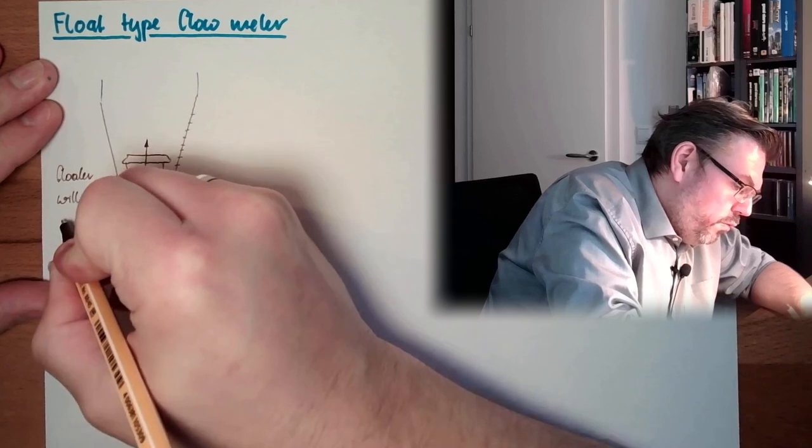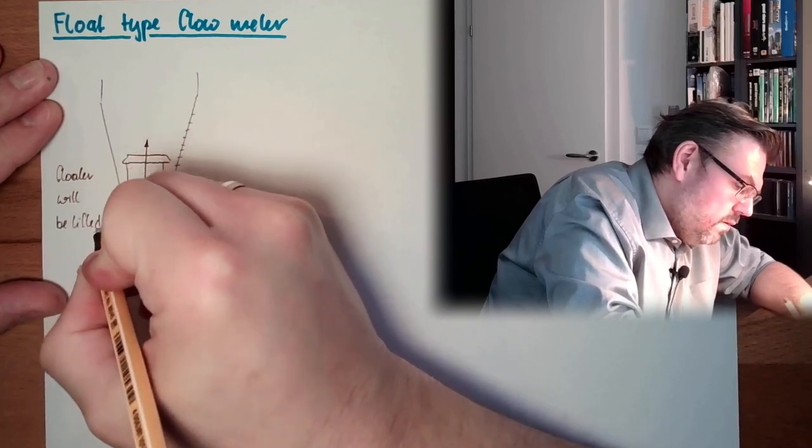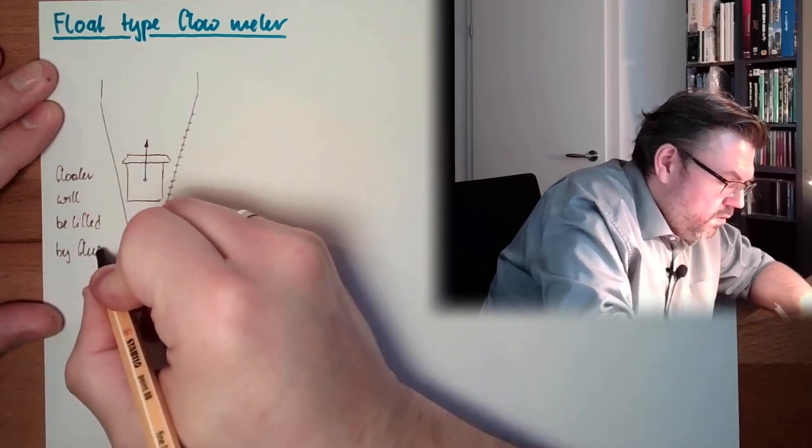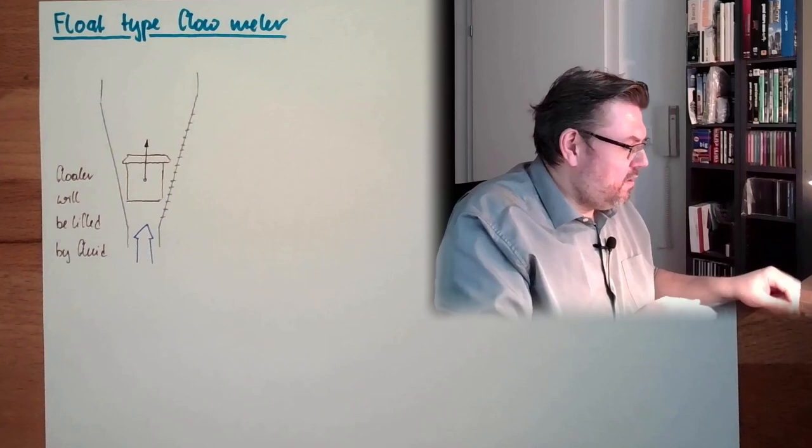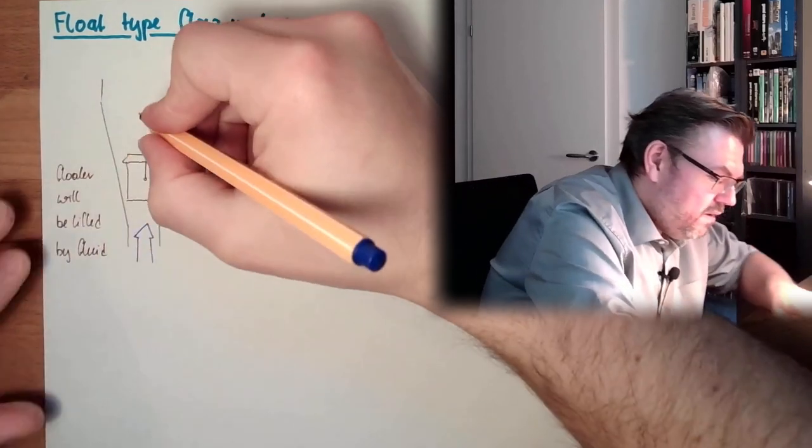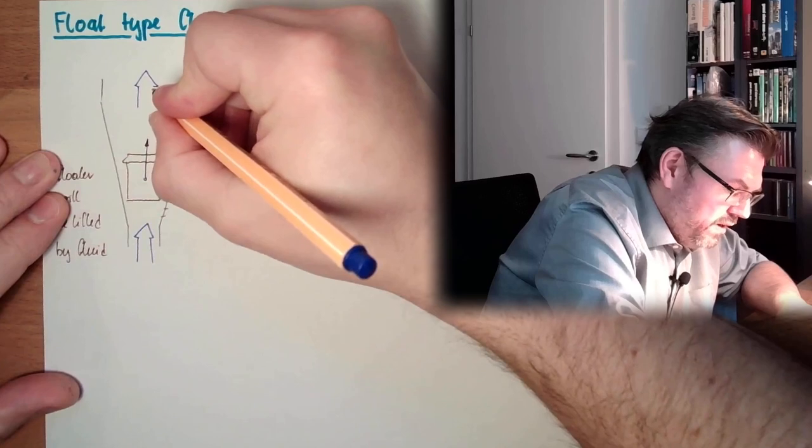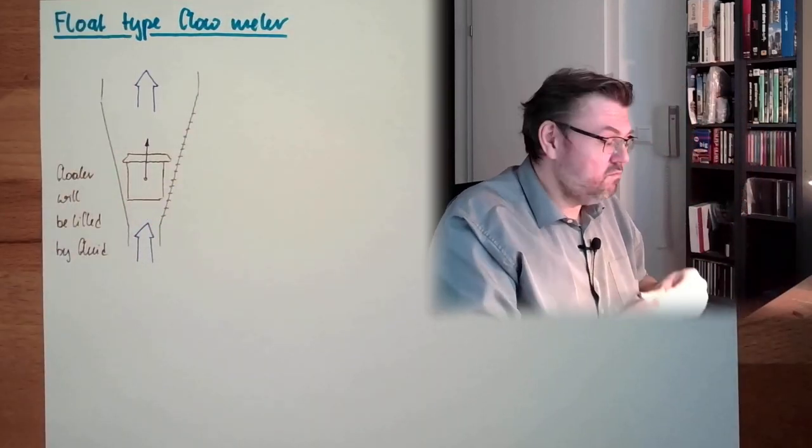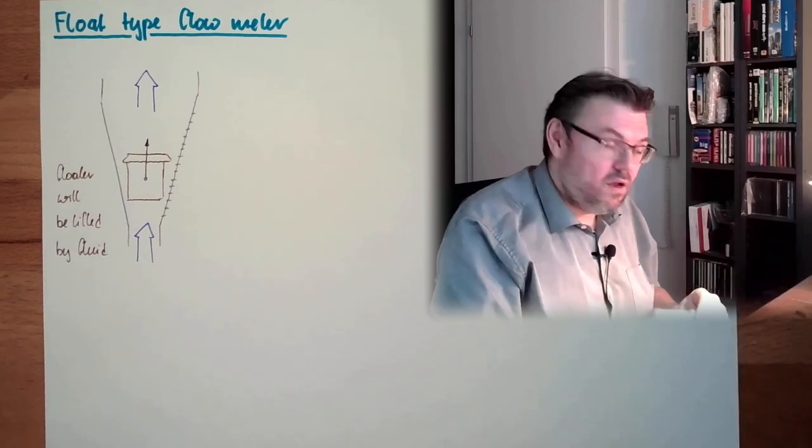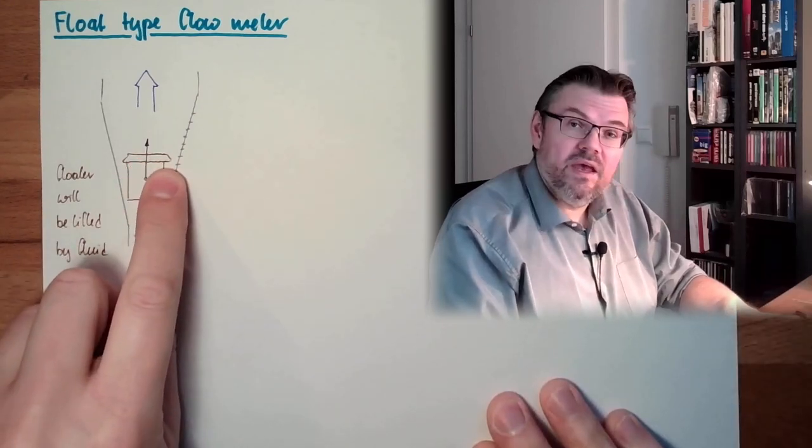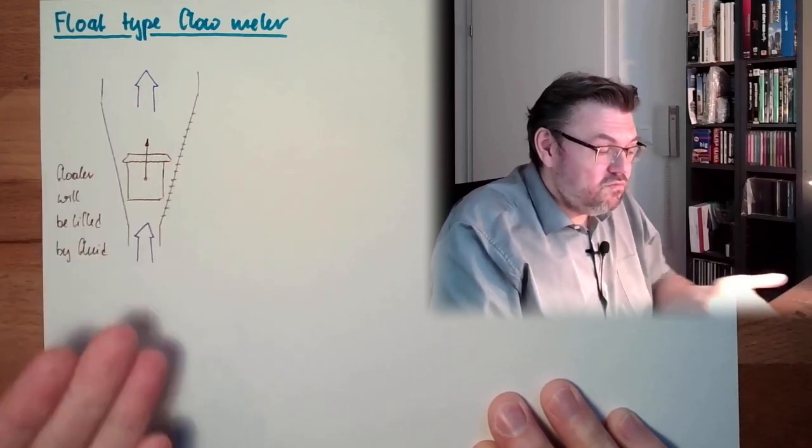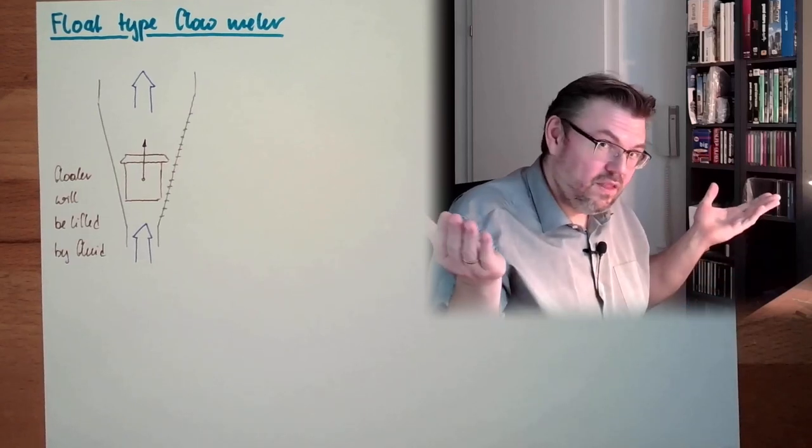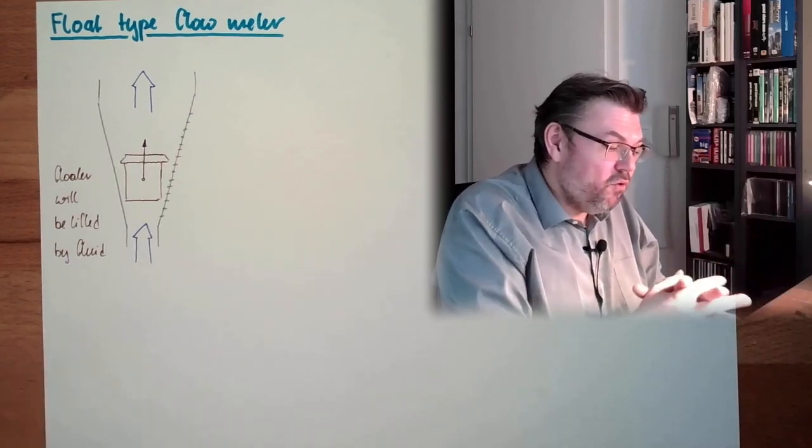The floater will be lifted, and here on the side, the fluid will then go on wherever it is needed. So it will simply pass through and will lift this floating element to a certain height. And if I can read the height at the scale, I know how much of this fluid is passing by. That's it. This is float type measurement.